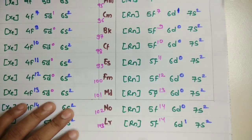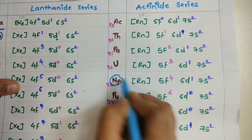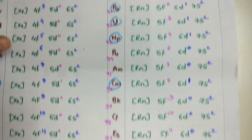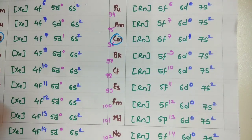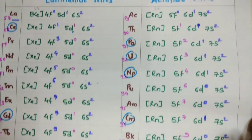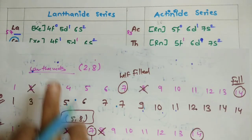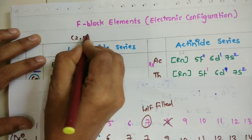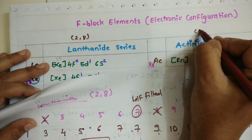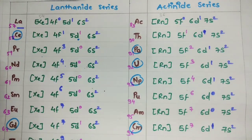So in the actinide series, the elements with 1 electron entering the 6d orbital are: lawrencium, curium, neptunium, uranium, protactinium, and thorium. The rest have 6d^0. To summarize the trick: for the lanthanide series, cancel the 2nd and 8th f electrons, then complete the series. For the actinide series, cancel the 5th and 8th f electrons, then complete the series.